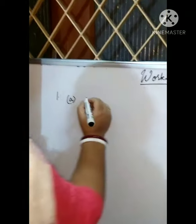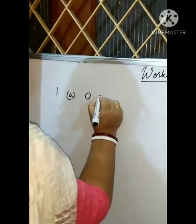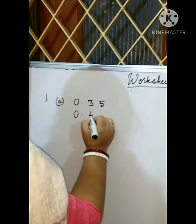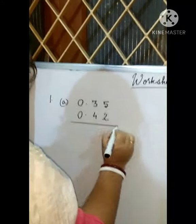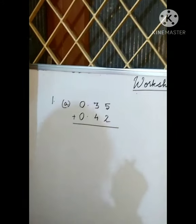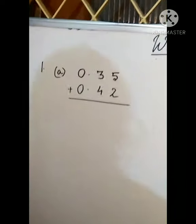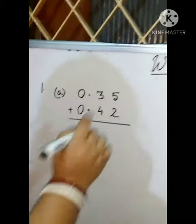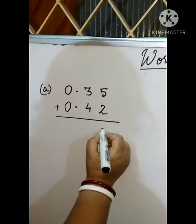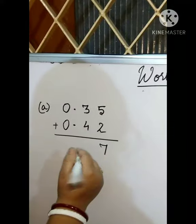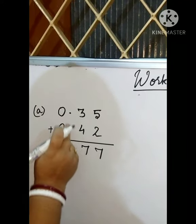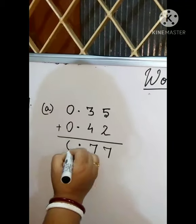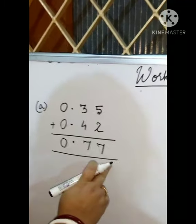Just see how to add the decimal number. The question is 0.35 and then we will add 0.42. So we will add. It's simple addition as you have learned before, but only the thing is you have to be careful about the decimal point. Now add it: 5 plus 2 is 7, 3 plus 4 is 7. Then in place of point, decimal point, put point. 0 plus 0 is 0. The answer is 0.77.